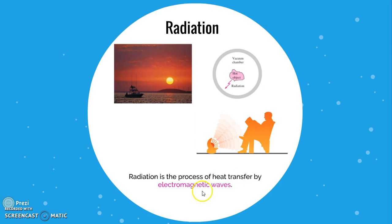Radiation is the process of heat transfer by electromagnetic waves. Every substance consists of atoms, which contain charged particles — protons and electrons. When more energy is given to an atom, these charged particles accelerate, and as they accelerate, they release electromagnetic radiation. More acceleration of charged particles produces more emission of electromagnetic waves. These electromagnetic waves are energy packets transported from one region to another and do not require any medium — unlike conduction and convection.